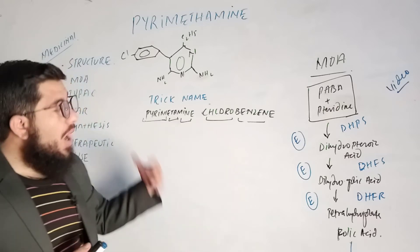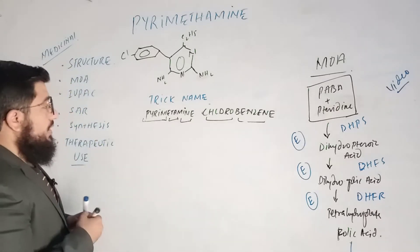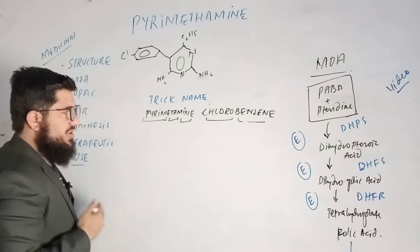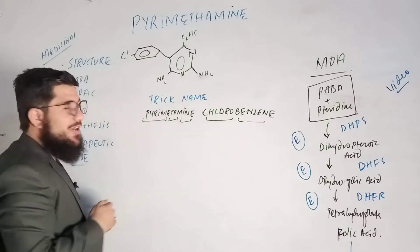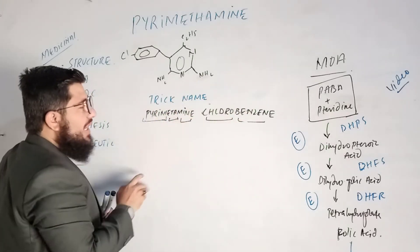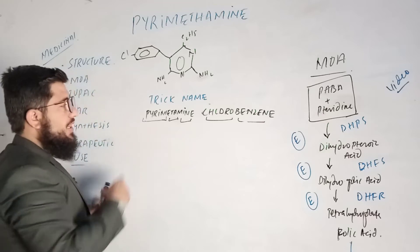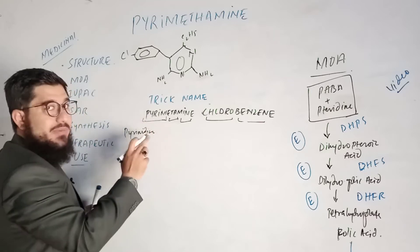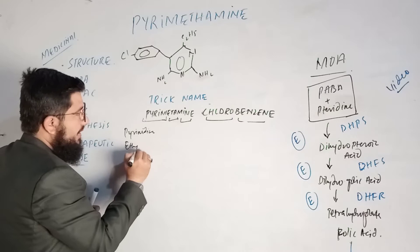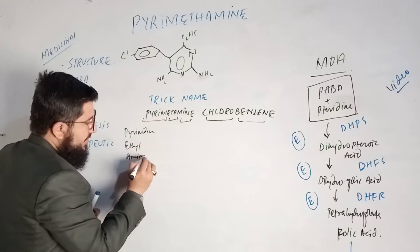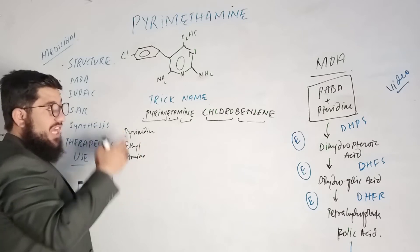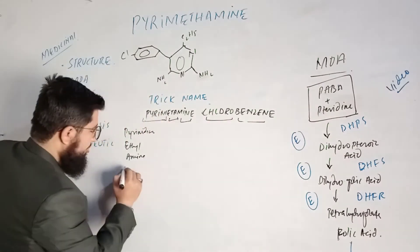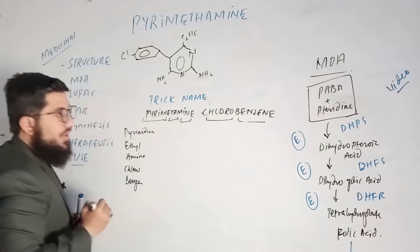How does this trick name help us? Simple — split the entire name 'paramethamine chlorobenzene' into parts. From 'paramethamine' I get three portions: pyrimidine, ethyl, and amine. From 'chlorobenzene' I get: chloro and benzene. So I now have five components: pyrimidine, ethyl, amine, chloro, and benzene.